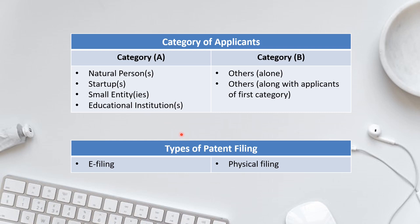The second thing to understand is the types of patent filing. A patent application can be filed either online, which is known as e-filing, or physically by going to the patent office, known as physical filing. For e-filing, you go to the patent office portal and submit soft copies. For physical filing, you go to the patent office in whichever jurisdiction you are following and submit hard copies. These two things are important when finding out the fees you have to pay.